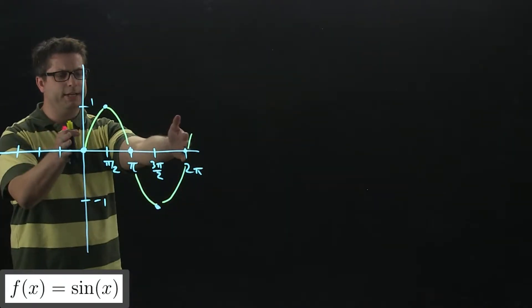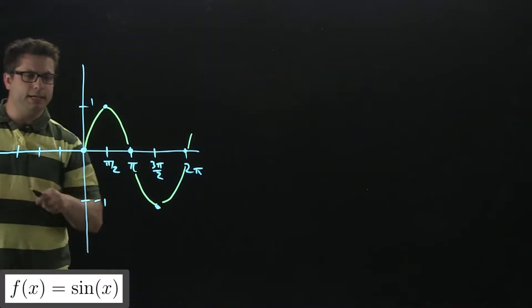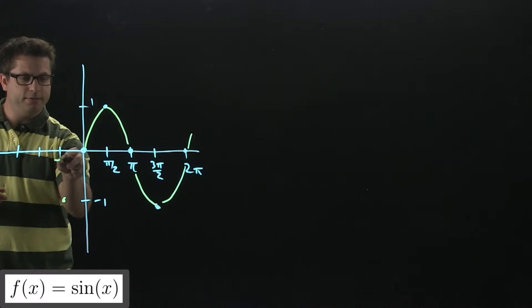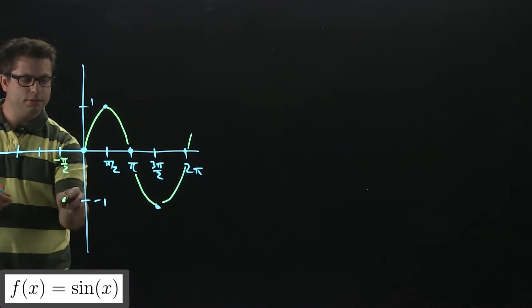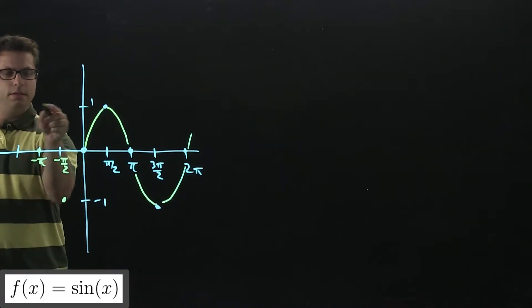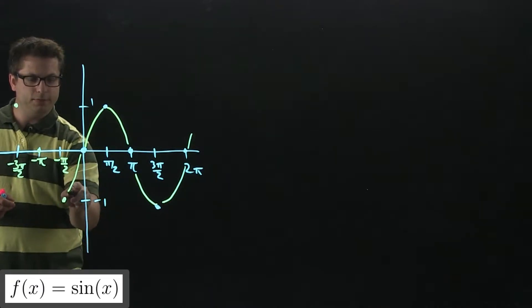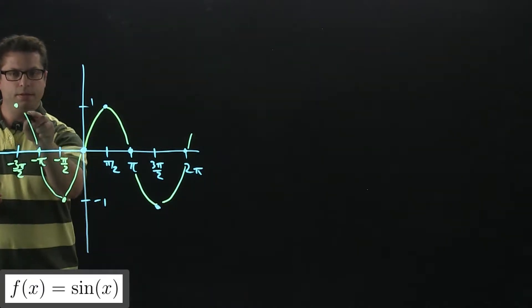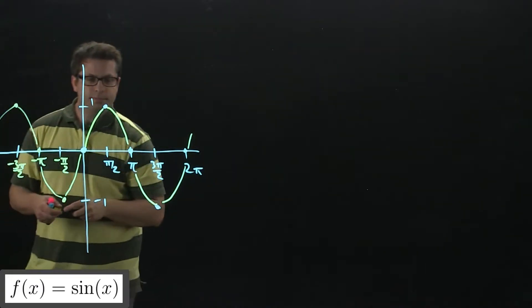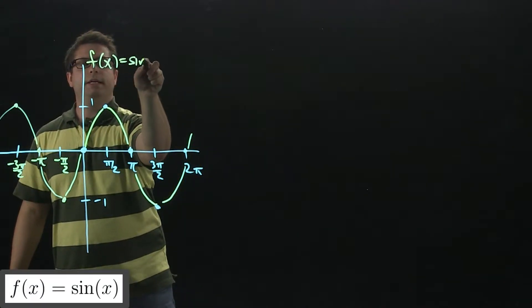On the right-hand side, since the period is 2 pi, this is going to be identical on this side. This is going to be negative pi over 2, negative 1, here's negative pi, and then negative 3 pi over 2, and 2 pi. Okay, this is sine x.